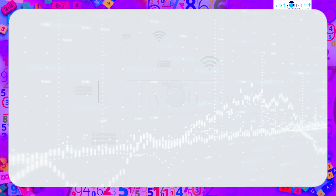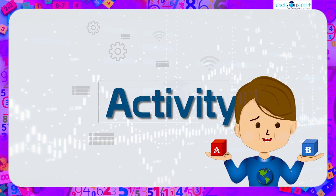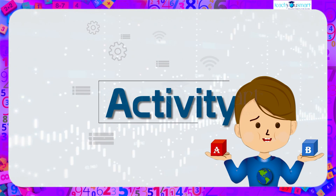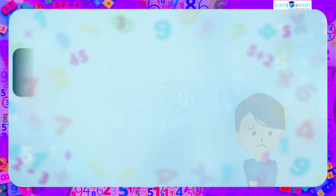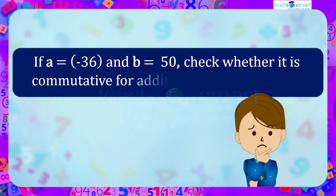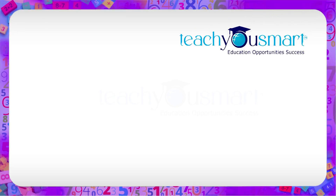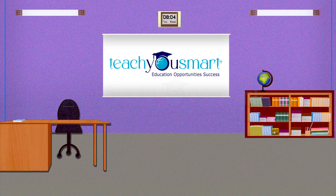Now let's check how much you understood by doing an activity. If a equals minus 36 and b equals 50, check whether it is commutative for addition and multiplication. That's all for now — see you all in the next class.